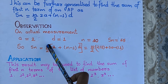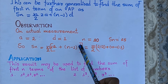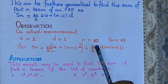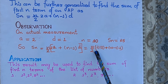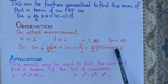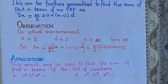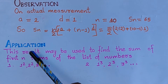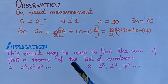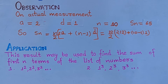So Sn is equal to n upon 2 times (2a + (n − 1)d). Putting n equal to 10, the formula gives 10 upon 2 times (2a + (10 − 1) × 1), and Sn equals 65. The application of this result is that it can be used to find the sum of squares of natural numbers and the cube of natural numbers. Thank you.